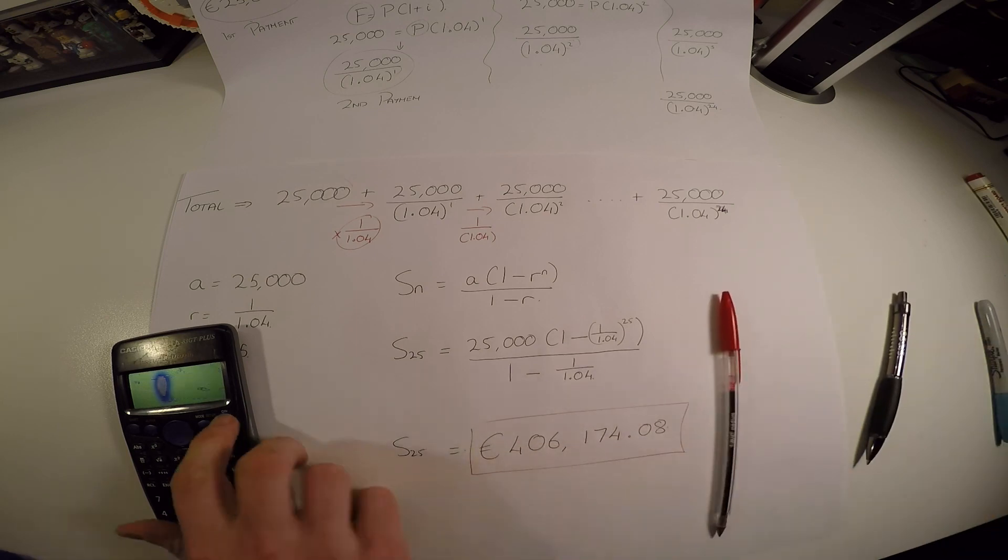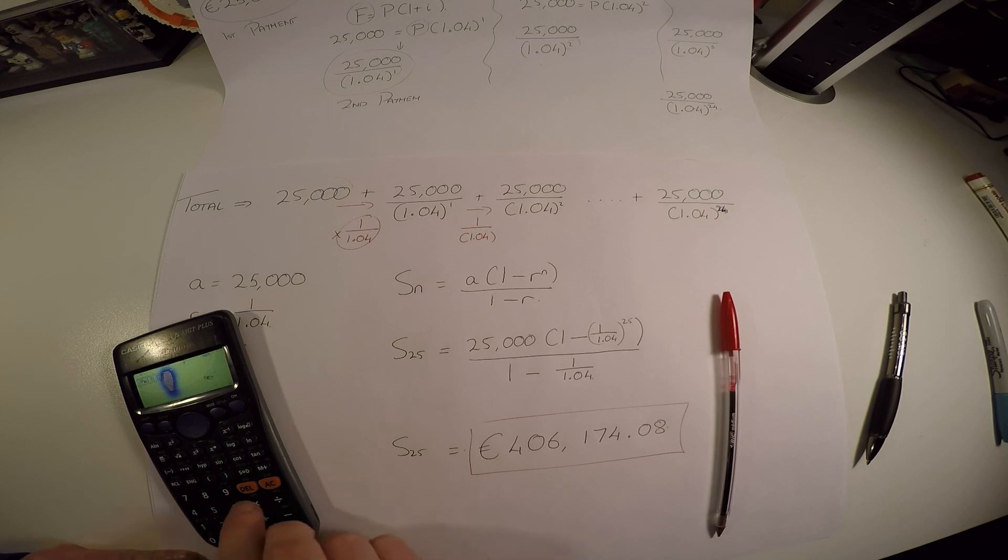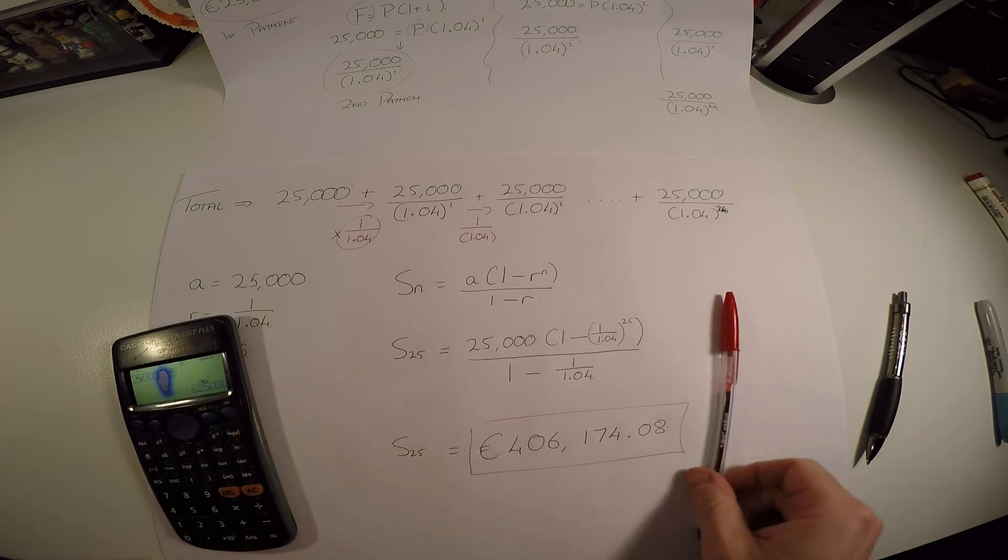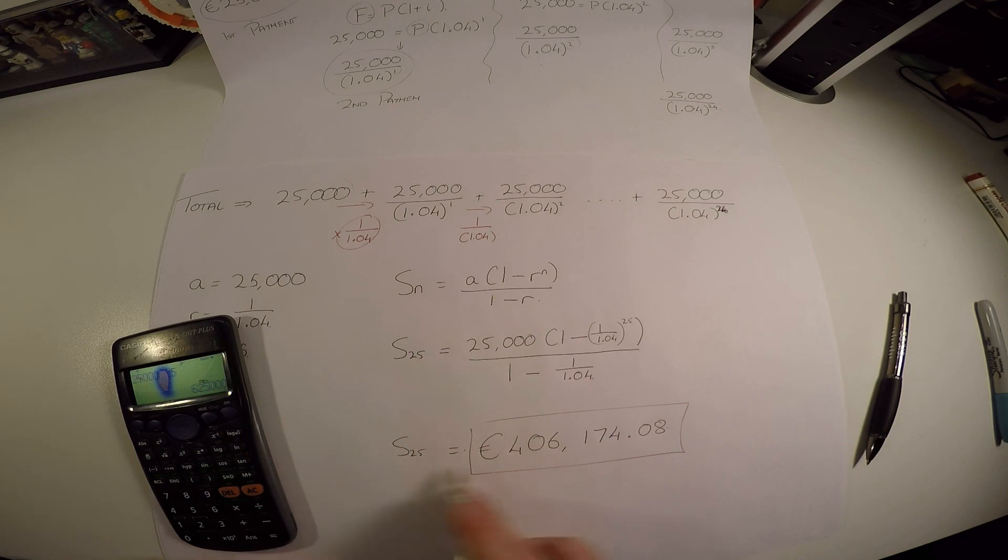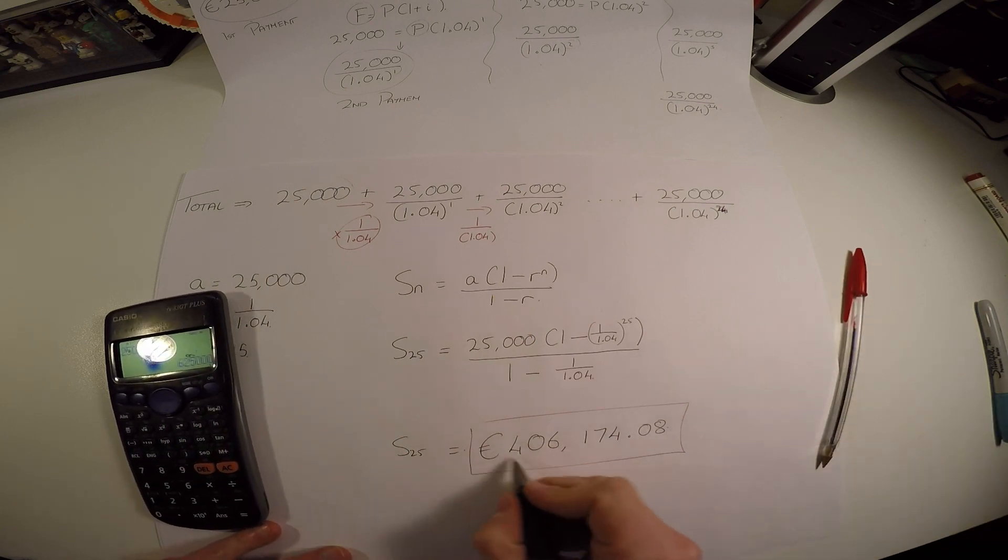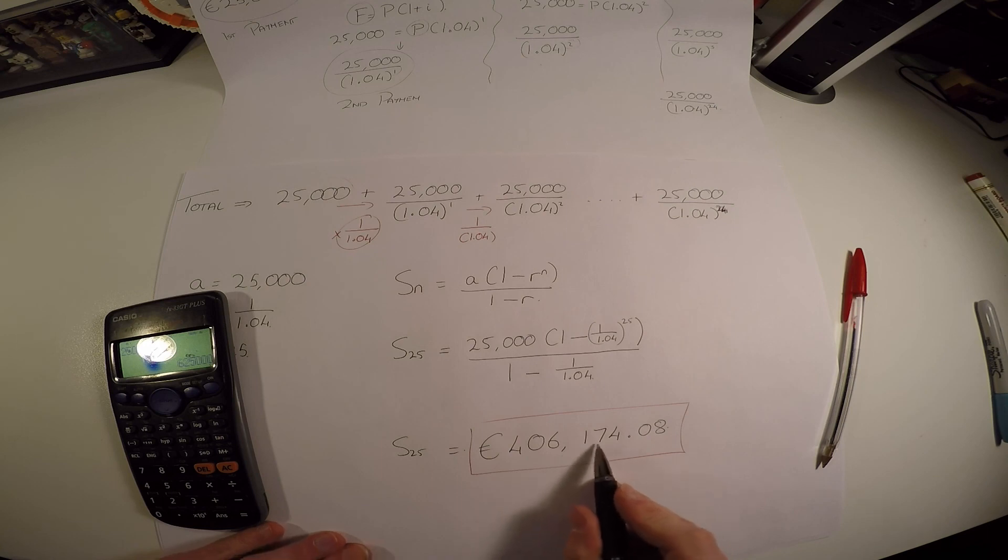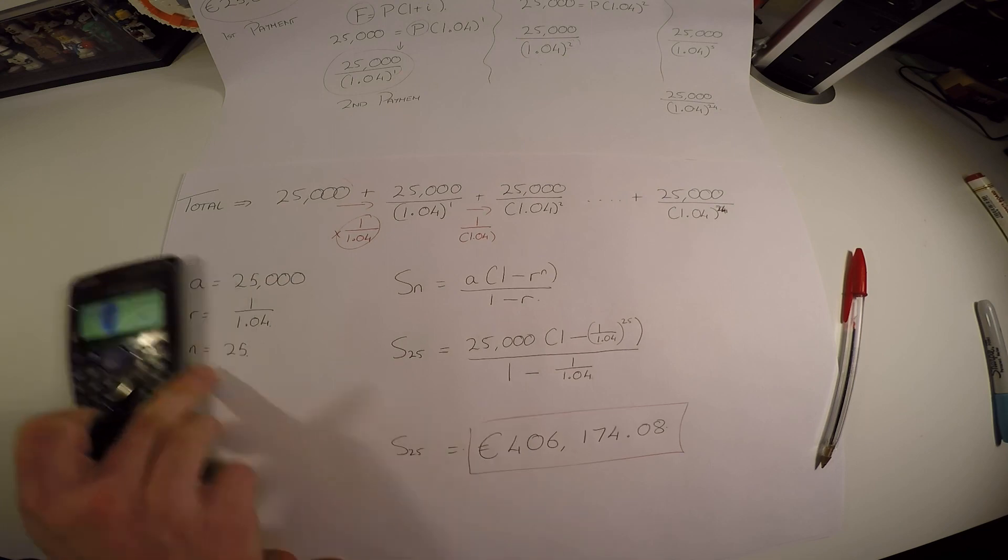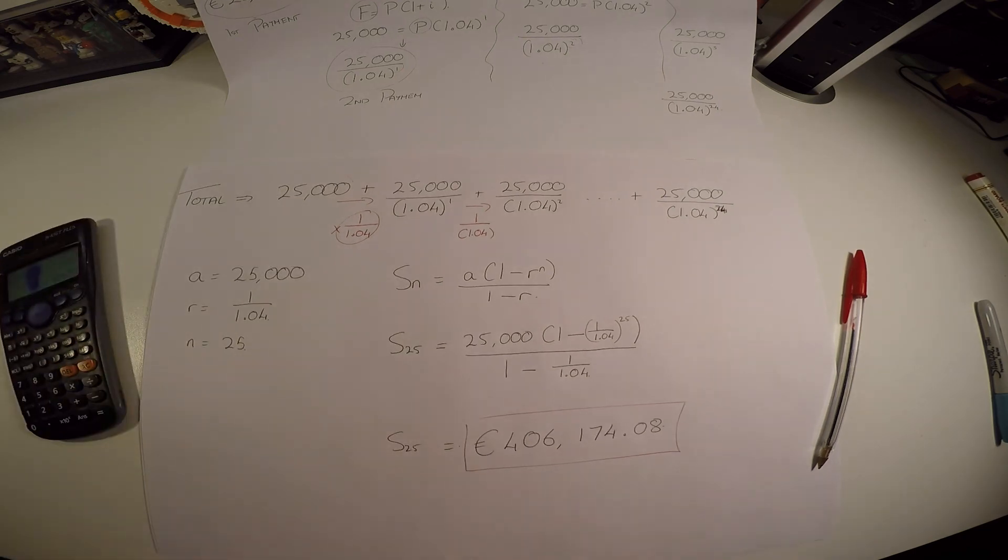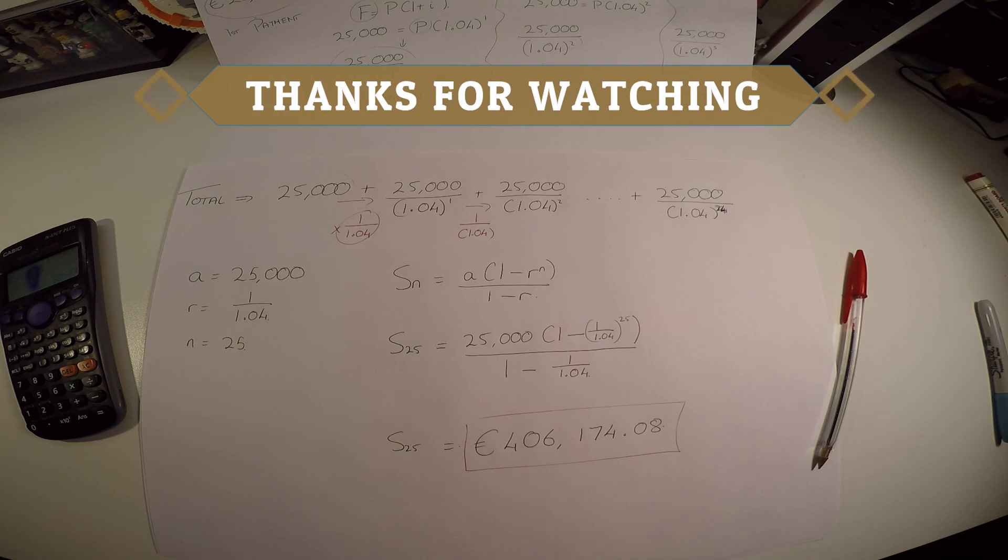So it turns out that even though I'm taking out 25,000 for 25 years, which should be 625,000 needed, I don't actually need that because of the interest accruing all the time. I just actually need to have 406,174.08 ready to go, and that'll give me 25,000 a year for 25 years. You often find this is the last part of a financial maths question. Hopefully that was enough to understand.